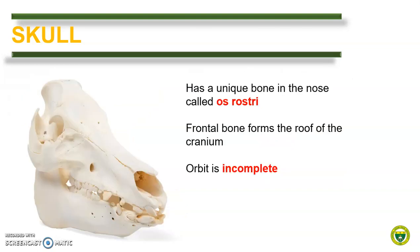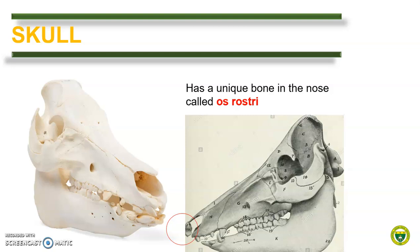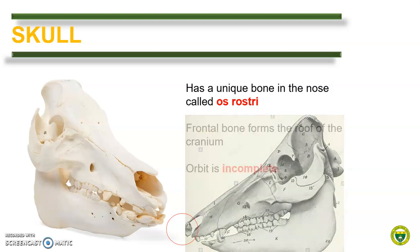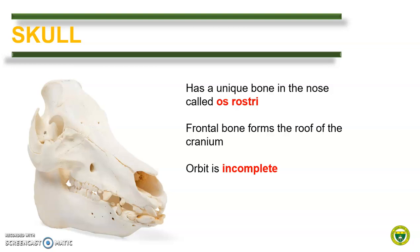Next, we move to the skull of a pig. Compared to other skulls, the pig is somewhat pyramidal in shape and more compact. What is unique in this animal is the presence of the os rostri. Because of the rooting behavior of the pig during feeding, an additional bone is present at the most rostral part of the skull giving support to the snout. Like with large ruminants, the frontal bone forms the roof of the cranium. The orbit is incomplete, same as with the dog, and is completed by the orbital ligament in the living animal.